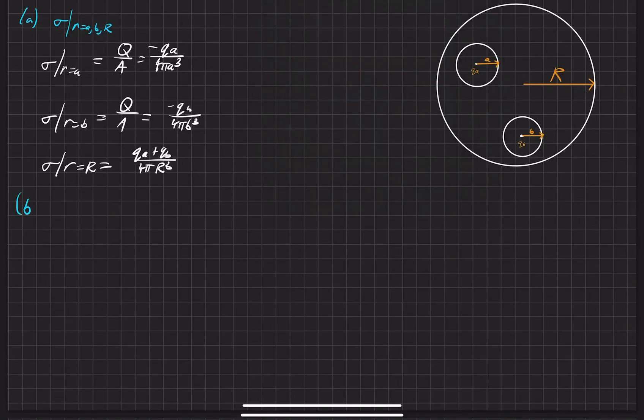For the second part of the problem, part B, our goal is to find the electric field on the outside of this charge distribution.